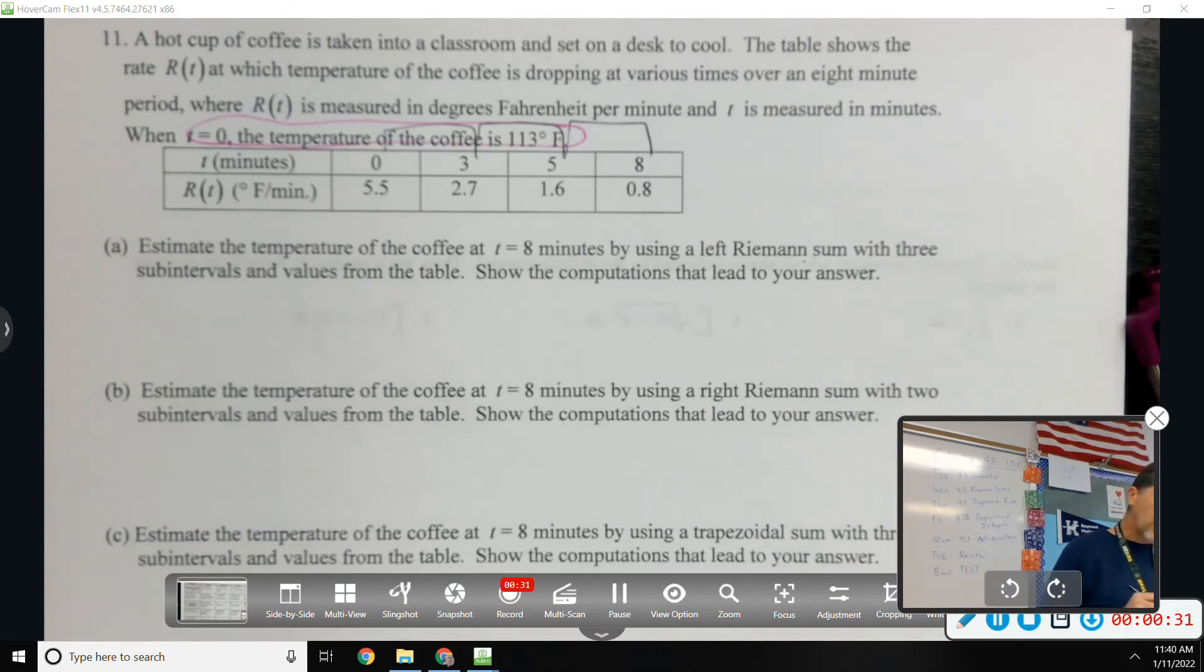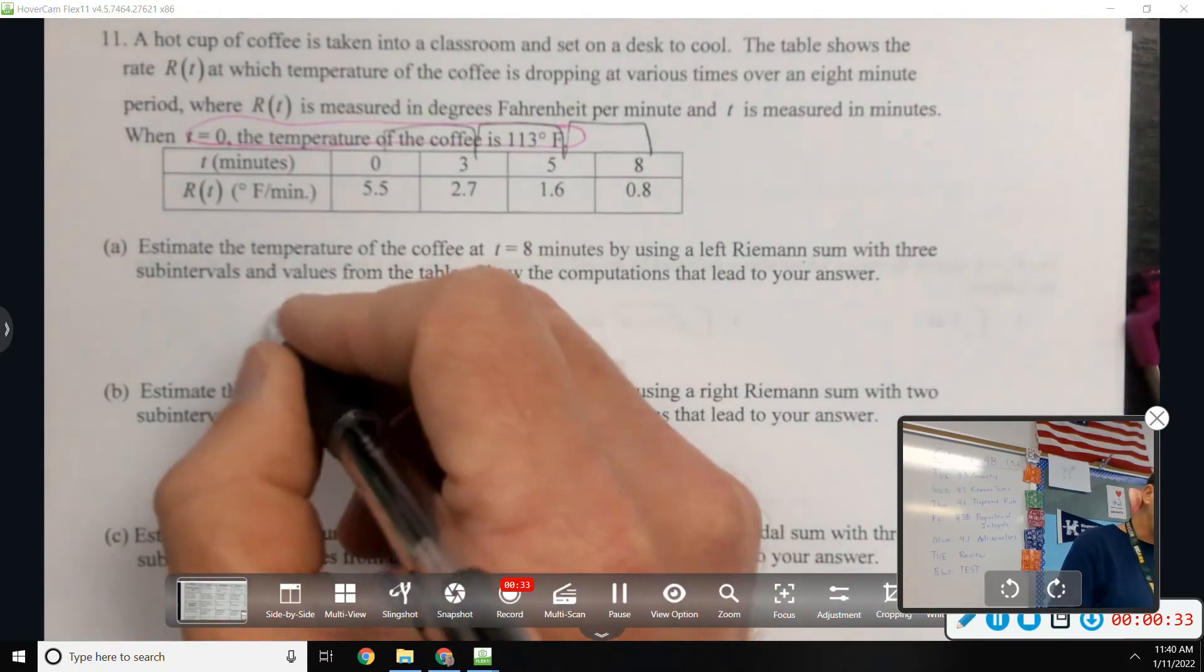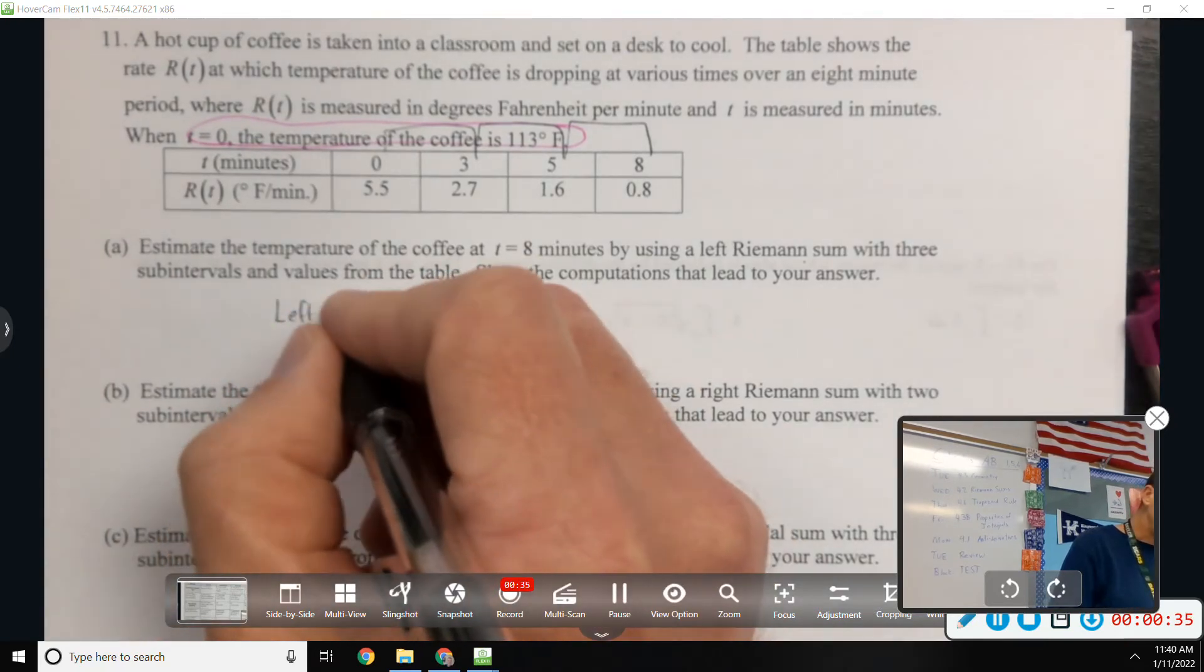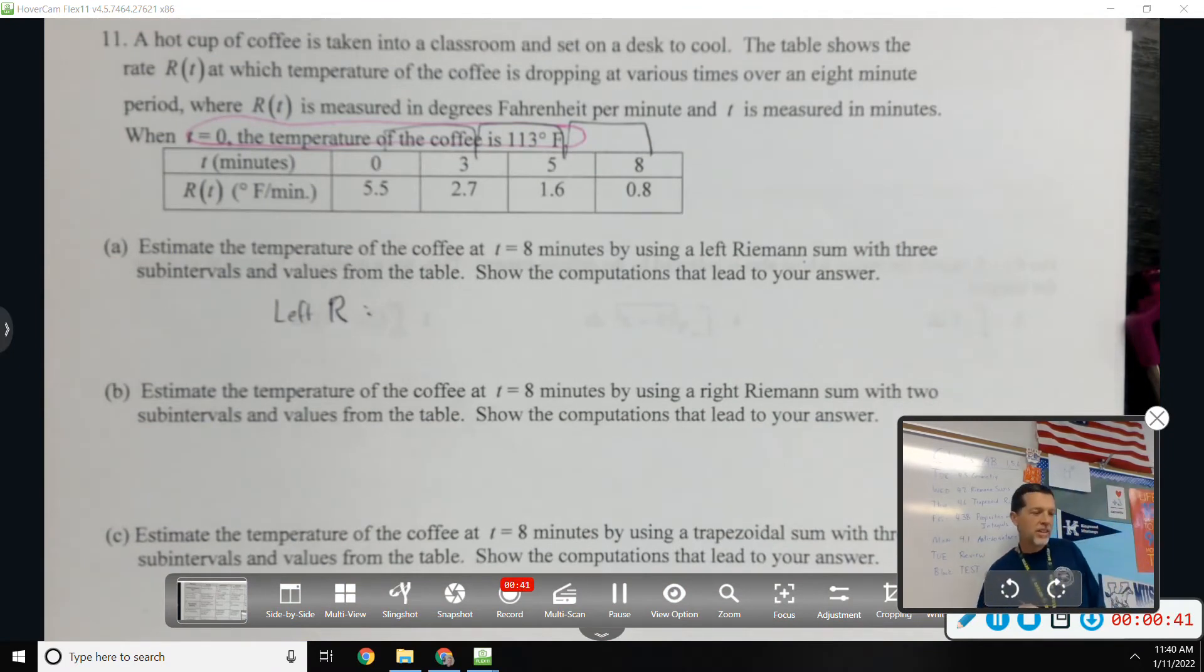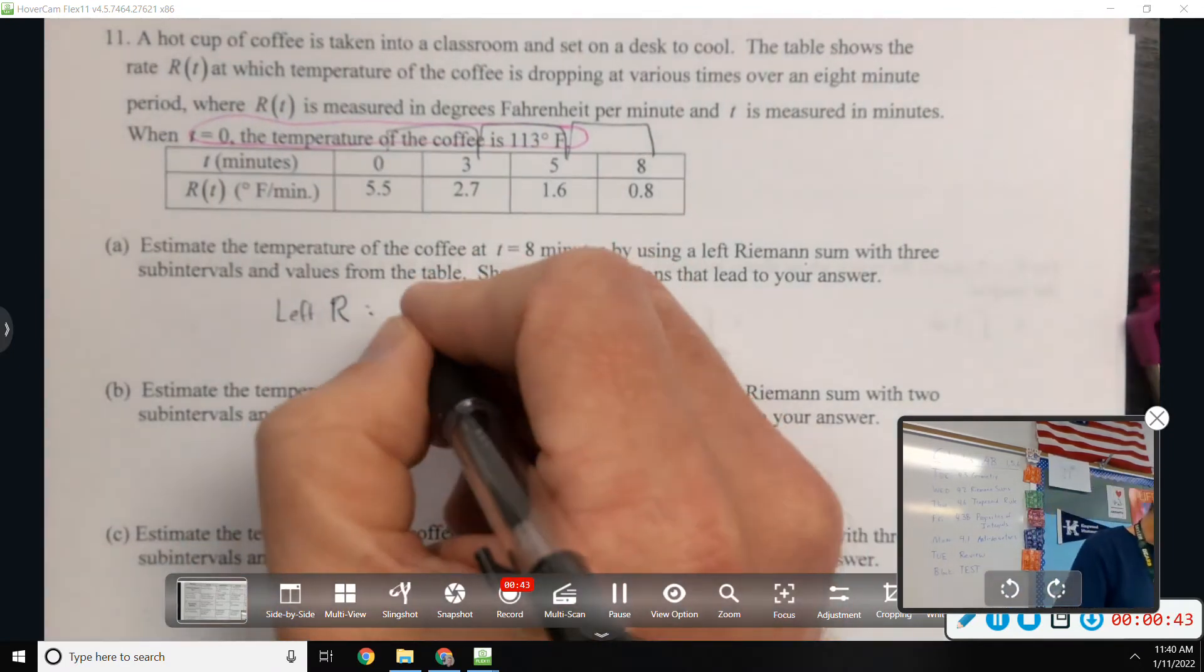Show the computations that lead to your answer. So the left sum, the left Riemann sum. So how wide is that first interval? Three. And which value should I use?